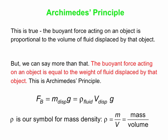This symbol that looks like a P is actually the Greek letter rho. Rho is our symbol for mass density. Mass density rho is mass divided by volume — mass per unit volume.